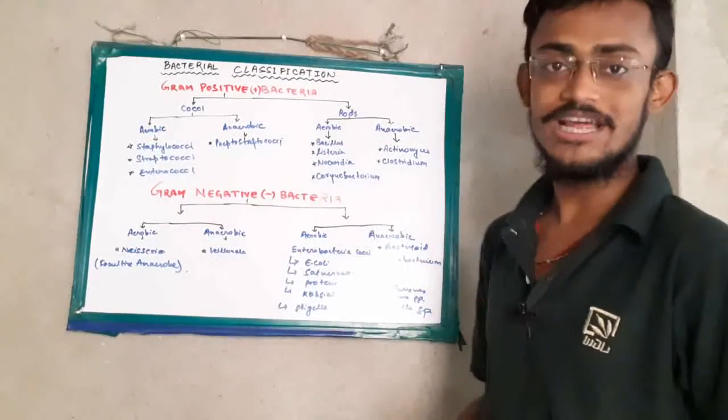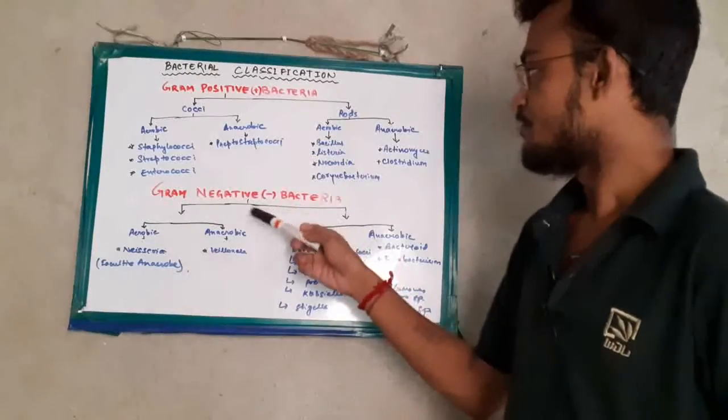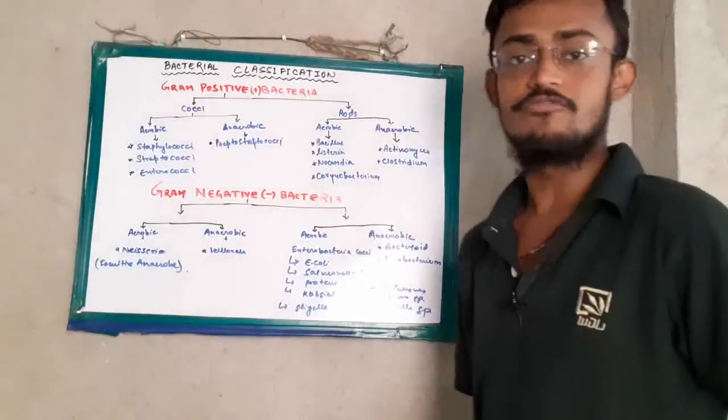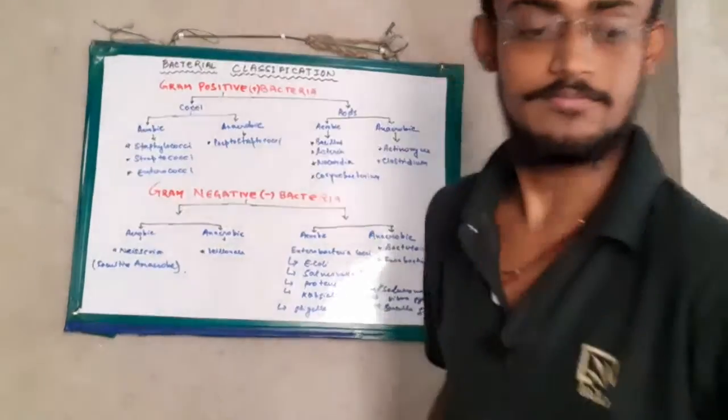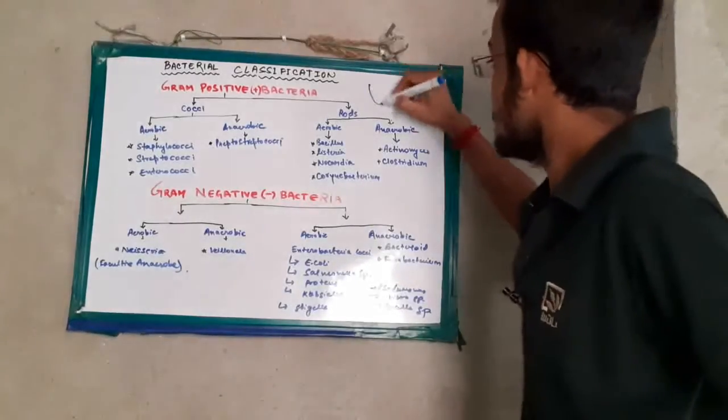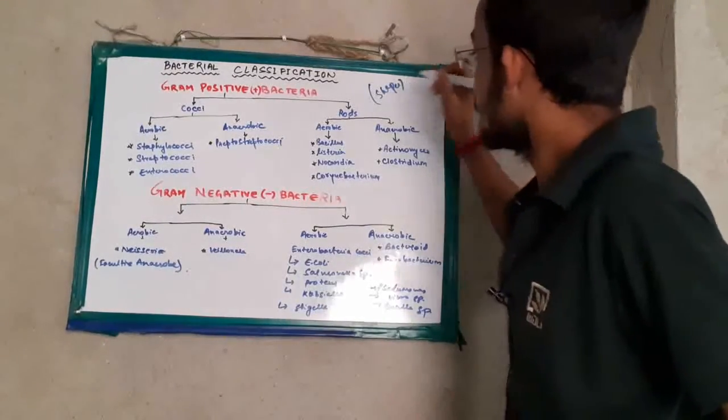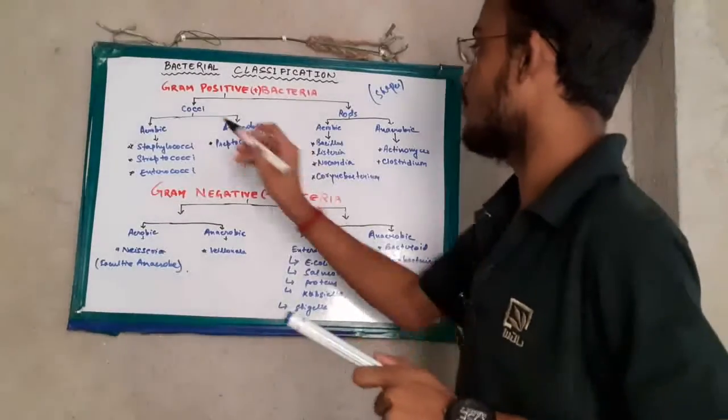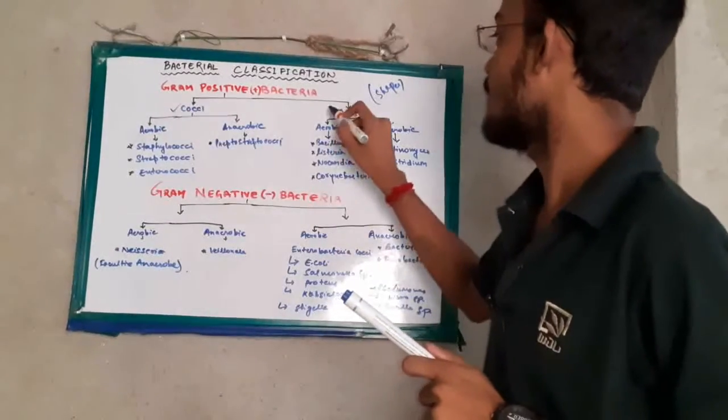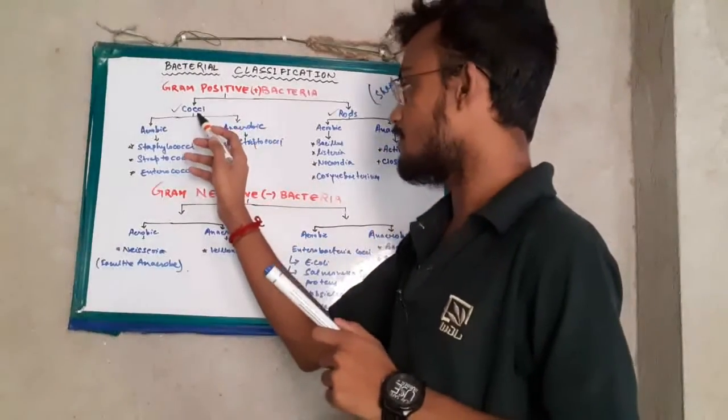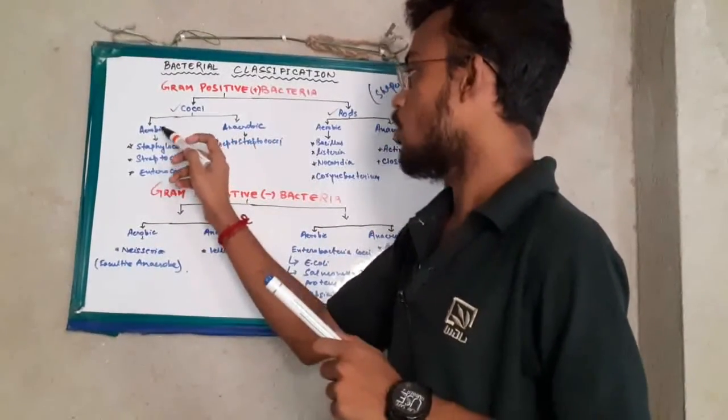Gram-positive bacteria and gram-negative bacteria. Gram-positive bacteria has been classified in two types on the basis of shape: gram-positive cocci and gram-positive rods.